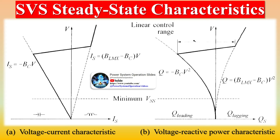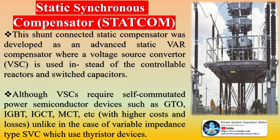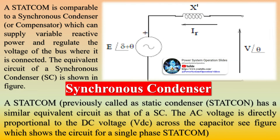In an SVC, the maximum reactive current is determined by the rating of the passive components — reactors and capacitors. STATCOM is a device for regulating poor power factor and poor voltage, based on a power electronics voltage source converter, and can act as either a source or sink of reactive AC power. If connected to a source of power, it can also provide active AC power. STATCOM provides better damping characteristics than the SVC as it is able to transiently exchange active power with the system.